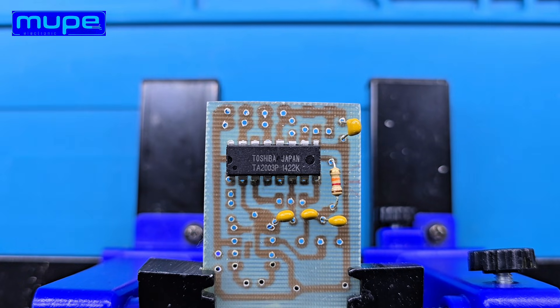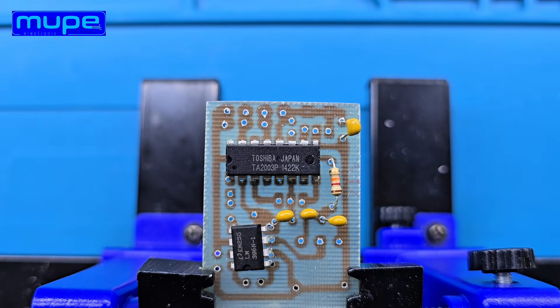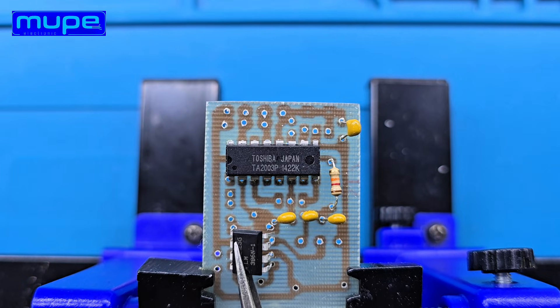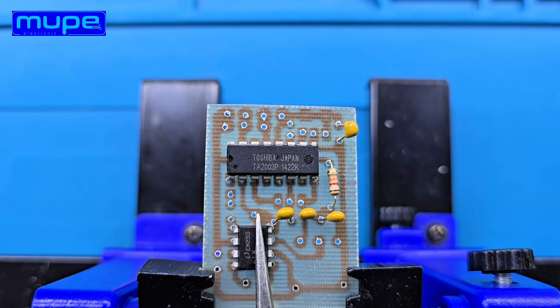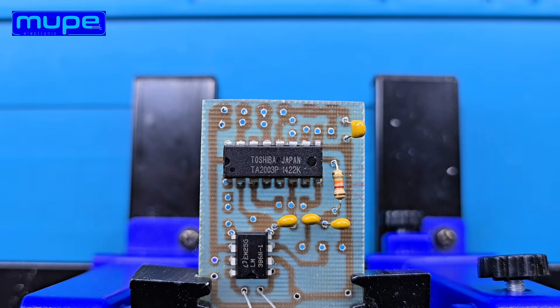I repurposed two of these old permeability tuned coils and hooked them up to a TA2003 radio IC. One coil works as the antenna tuning coil, and the other serves as the oscillator coil.